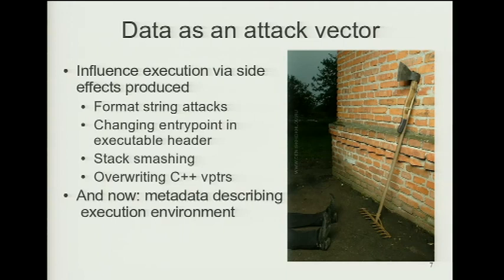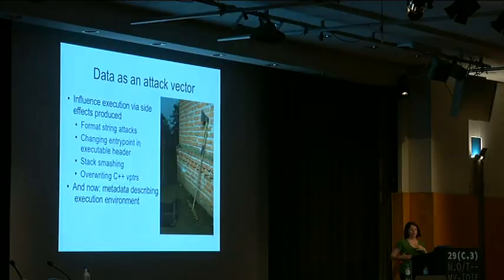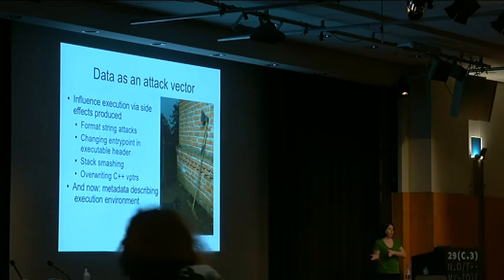Focusing on data as an attack vector — this is a famous image in our lab, we call it 'composition kills.' How do we influence execution? Data can influence execution via side effects. Interesting side effects will end up changing the way execution happens, the code path taken, depending on the metadata and how operations happen on it. A simple example may be just changing the entry point in ELF so some other code is jumped to first. Format string attacks are crafted data that ends up being an attack vector, as is overriding addresses that end up being called as functions. Metadata describing the execution environment becomes this attack vector.